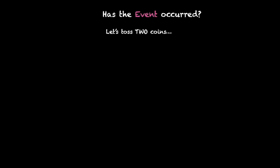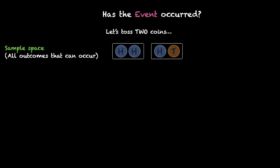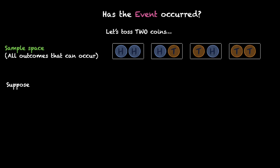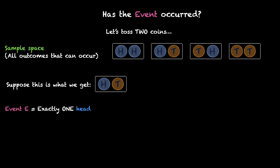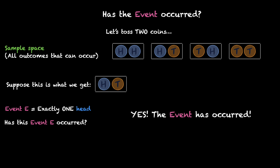Now how do we know that an event has occurred? Let's again toss two coins. This is our sample space. Let's assume that we toss two coins and we get the first one as heads and the second one as tails. The question for us is: this event E, which is exactly one head — has this event occurred? We can actually see that there's exactly one head. We have the first one as heads and the second one as tails. So yes, the event has occurred.